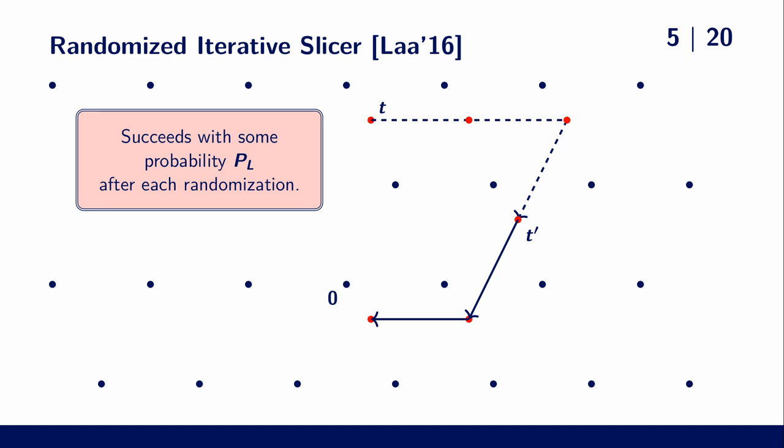Then the naive time complexity would be proportional to the list size divided by the success probability. And the main aim of this work is to analyze this success probability.